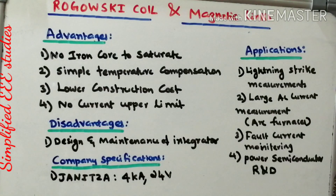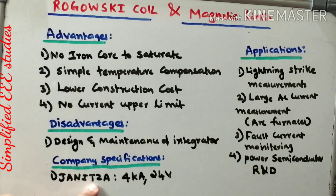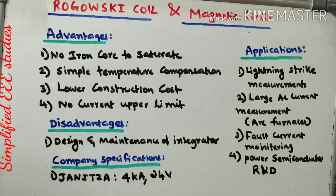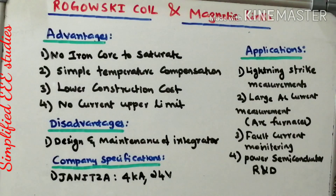One company that produces Rogowski coils is Janitza, which provides different varieties of Rogowski coil. One specification worth mentioning: up to 4 kilo-amperes of impulse can be measured, with an operating voltage of 24 volts. The overall body is plastic covered. This is one example of a commercial Rogowski coil.